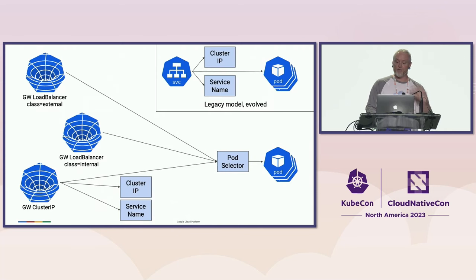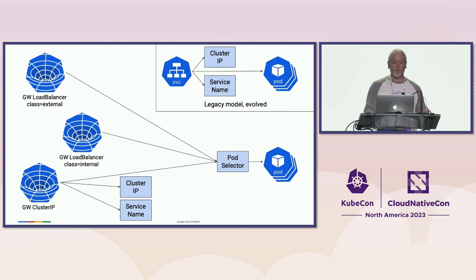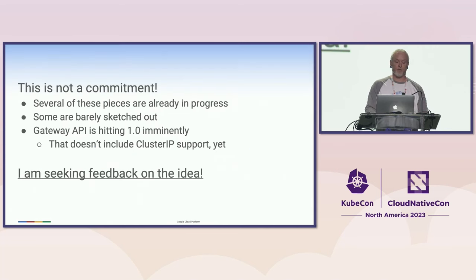Maybe we can relegate a service into just being a group of pods, and maybe we need a new API — we'll figure that out. Either way, we still need to interoperate with services. We can decompose the service API into smaller things, giving us a constellation of concepts that lets us build a composable service. Final word: this is not a commitment. These are ideas that I've thrown out. We're looking for feedback — if you love it or hate it, let us know. Thanks.